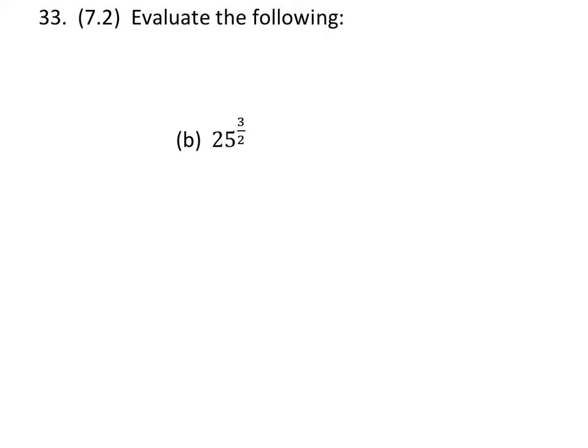I'm going to keep the 3 halves as the exponent. If we look at the fraction, which is the exponent here, and focus on the denominator, which is 2, that means I need a number squared in order to cancel this 2 out. So what number squared would give us 25?